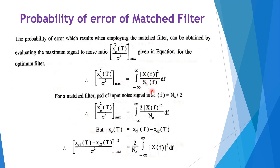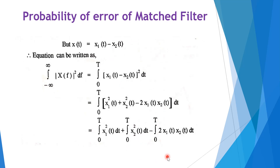We replace SNI(f) with N0/2, so the denominator gives N0 and the numerator gives a factor of 2. Since x_o(t) = x_o1(t) − x_o2(t), we rewrite taking 2/N0 separately and find the integration of |X(f)|² df. With x(t) = x₁(t) − x₂(t), this can be written as the integration of [X(f)]² df.